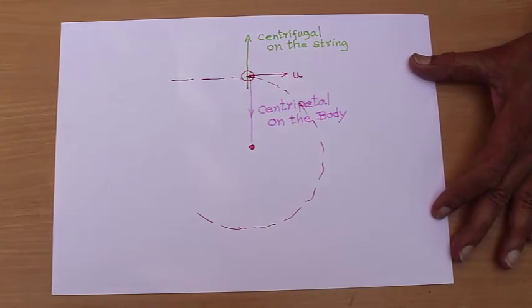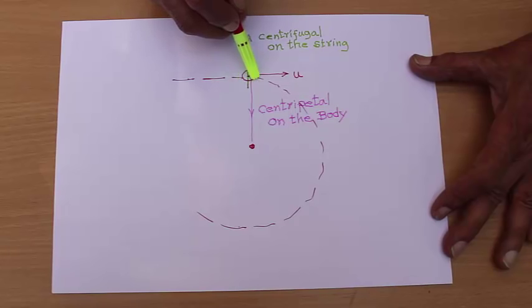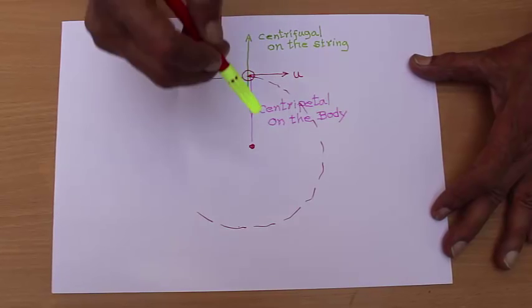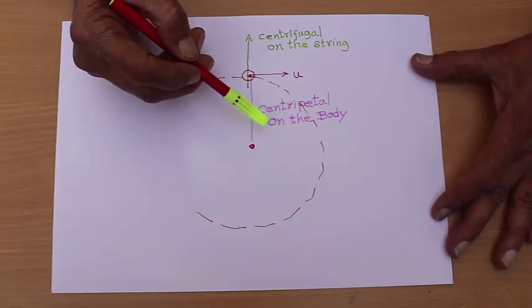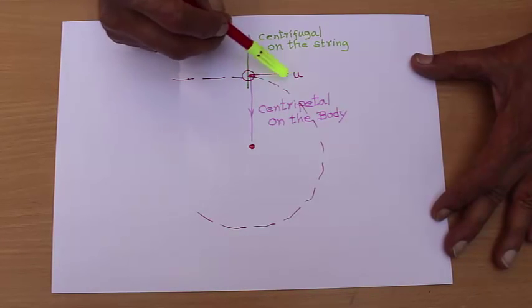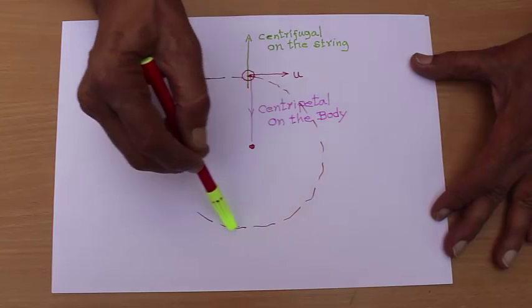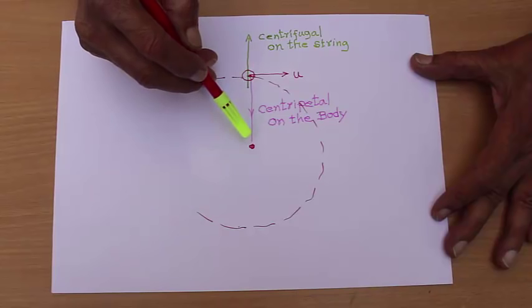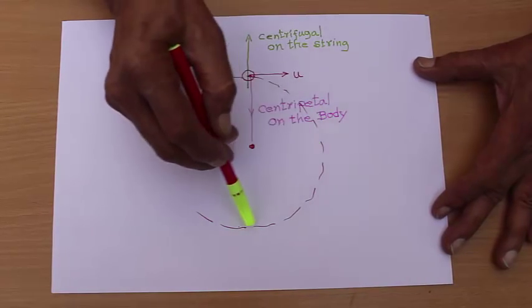The real explanation is like this. This is the initial velocity of the body and this is the centripetal force which acts on the body, and therefore this initial velocity goes on changing towards the center and it is the centripetal force which causes this circular motion.